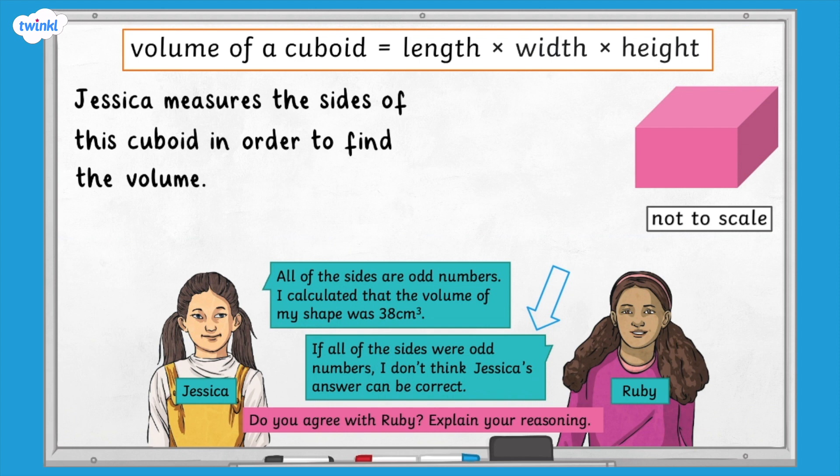Ruby says that if all of the sides were odd numbers, then Jessica's answer cannot be correct. Do you agree with Ruby? And don't forget to explain your reasoning. Pause here and have a go at the question, and then press play again when you're ready to continue.